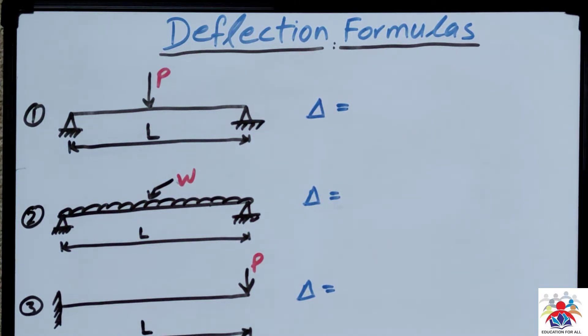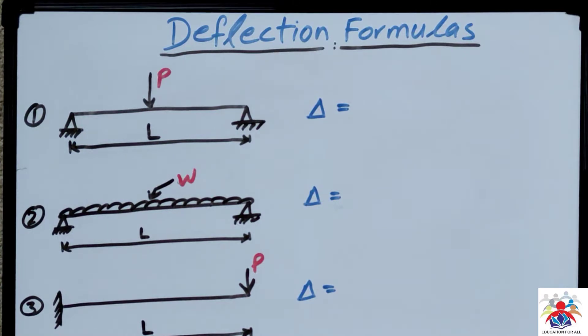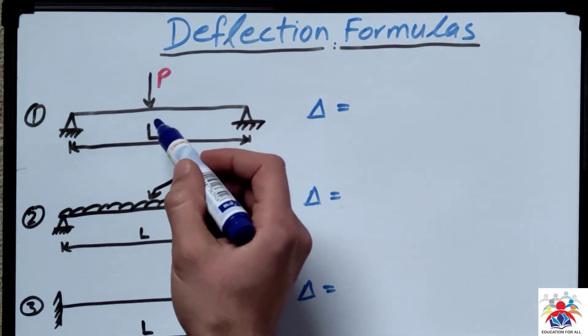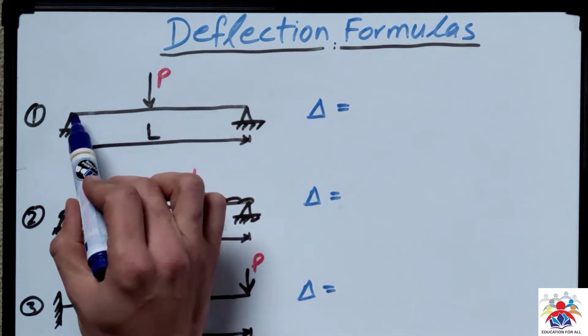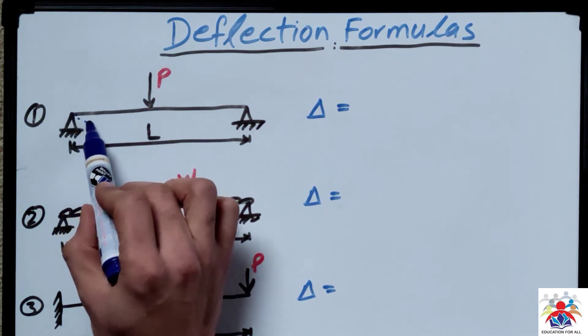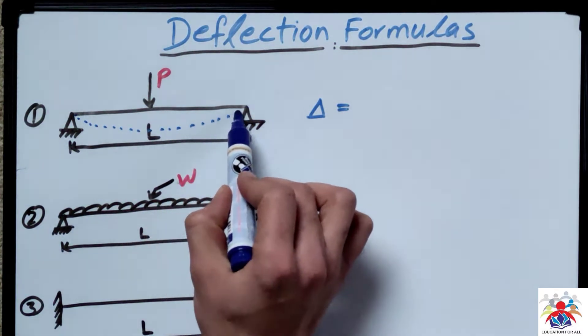It can be an angle or it can be a distance. For example, we have a simply supported beam with point load acting in the middle. It will try to deflect. Deflect is actually a kind of bending, so it will try to deflect our beam in this condition.